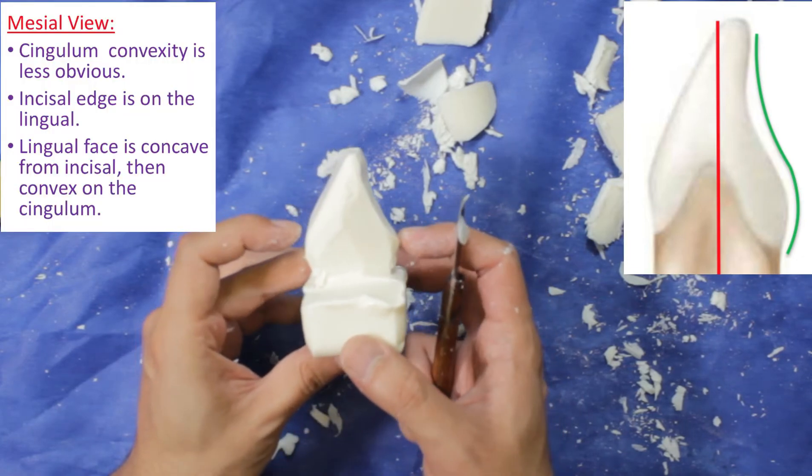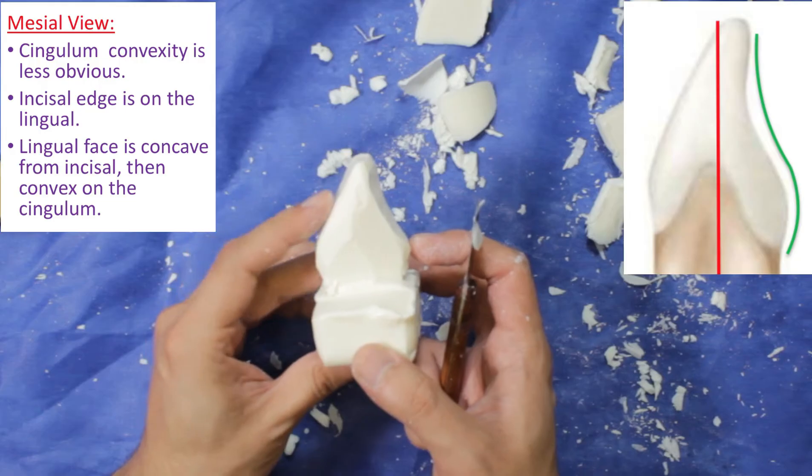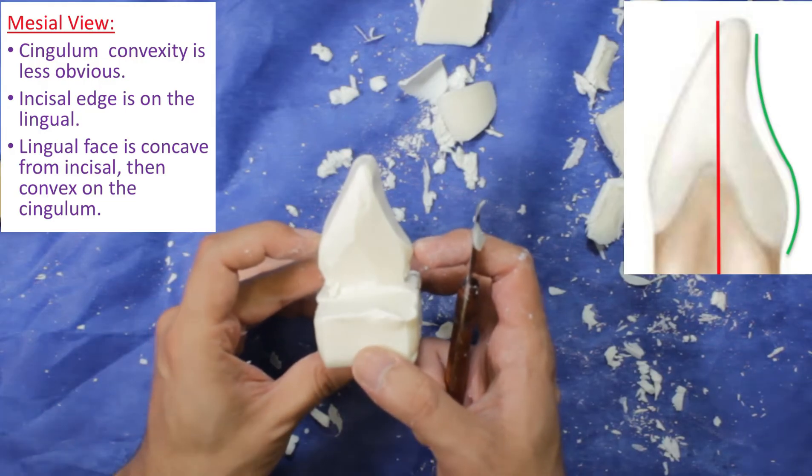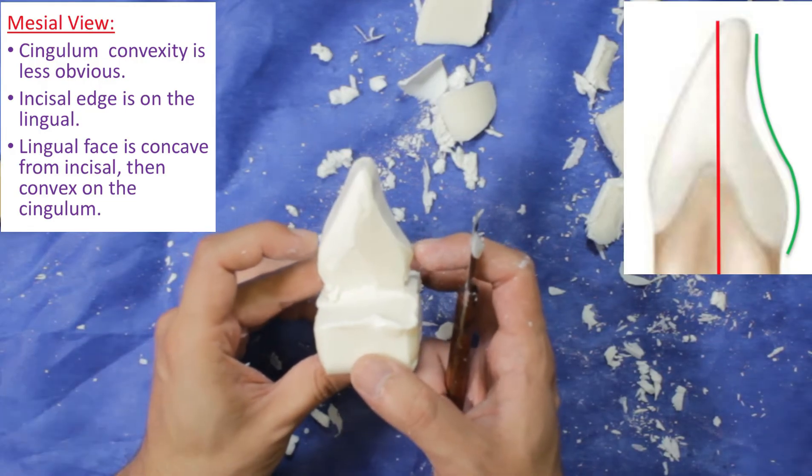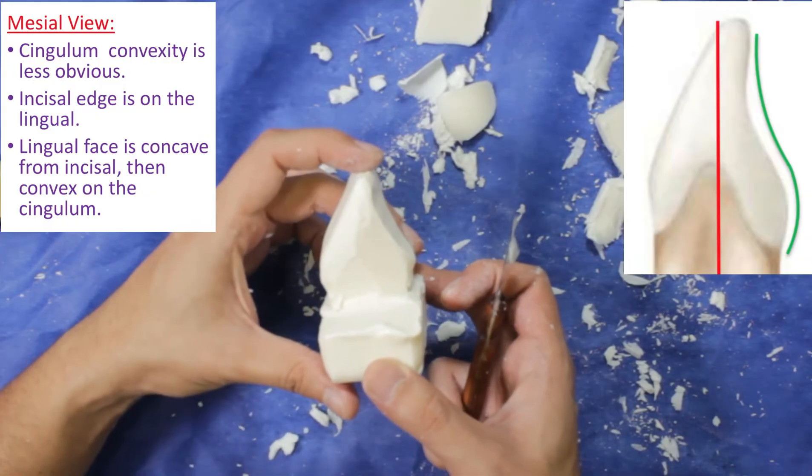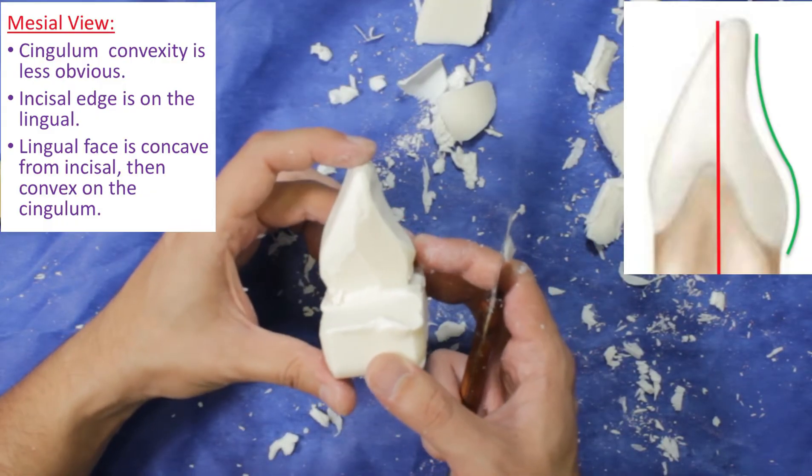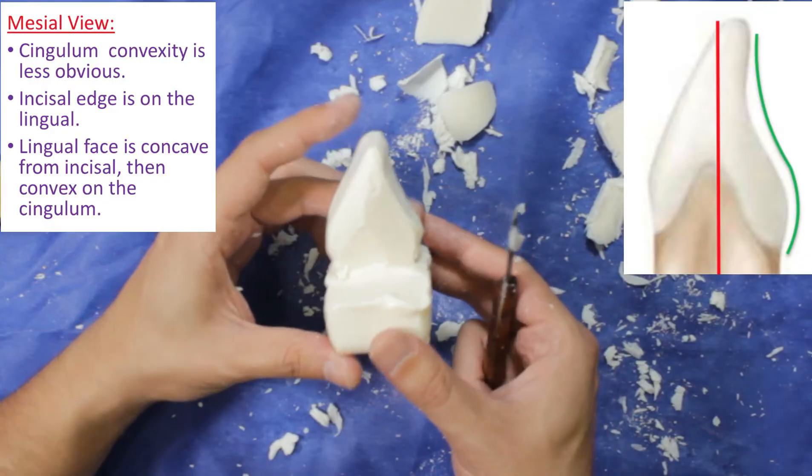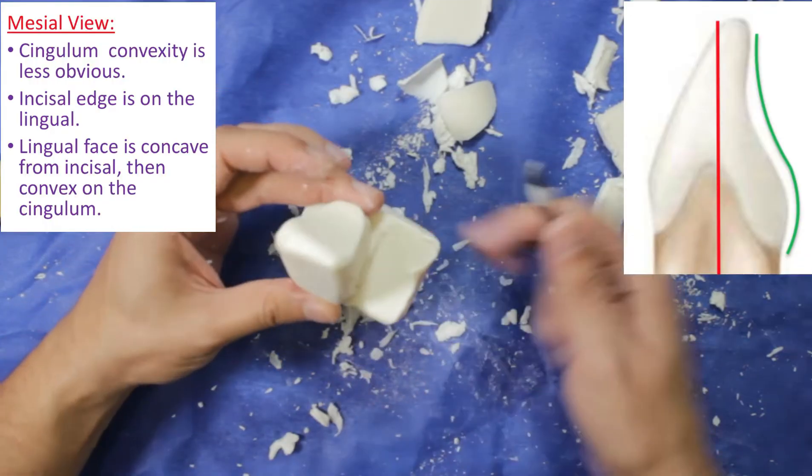From mesial view, cingulum convexity is less obvious. Also, incisal edge is on the lingual. Lingual face is concave from incisal then convex on the cingulum. Also, cingulum is located more closer to the cervical line, and incisal edge is slightly on the lingual face.